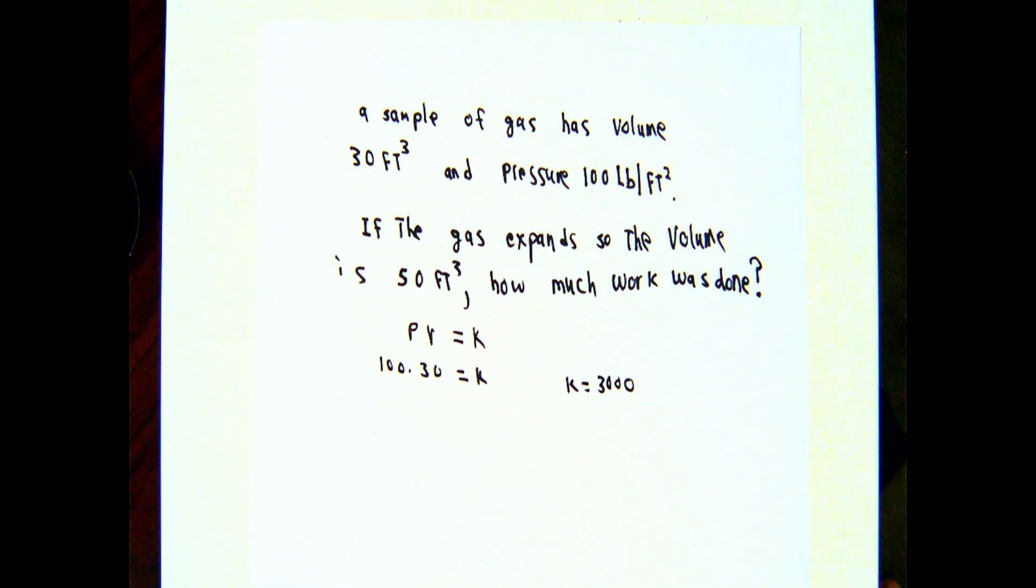At every moment, pressure times volume is supposed to be this number k. If the pressure is 100 and the v is 30, then 100 times 30 must be this k number. k must be 3000. In view of the comments that we made just a few moments ago then, the amount of work involved is easy to calculate. An antiderivative of 3000 over v would be 3000 times natural logarithm of v. Putting the limits of integration in, the amount of work needed is going to be 3000 times natural log of 50 over 30. The batteries in my calculator died, so you can figure this out as a decimal number if you want to.